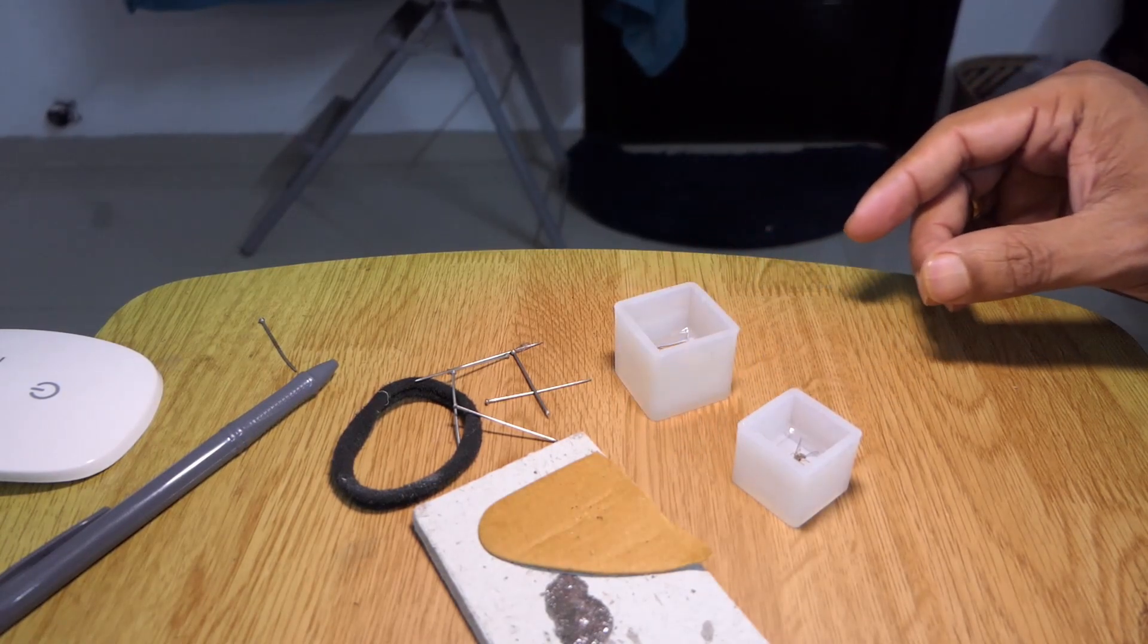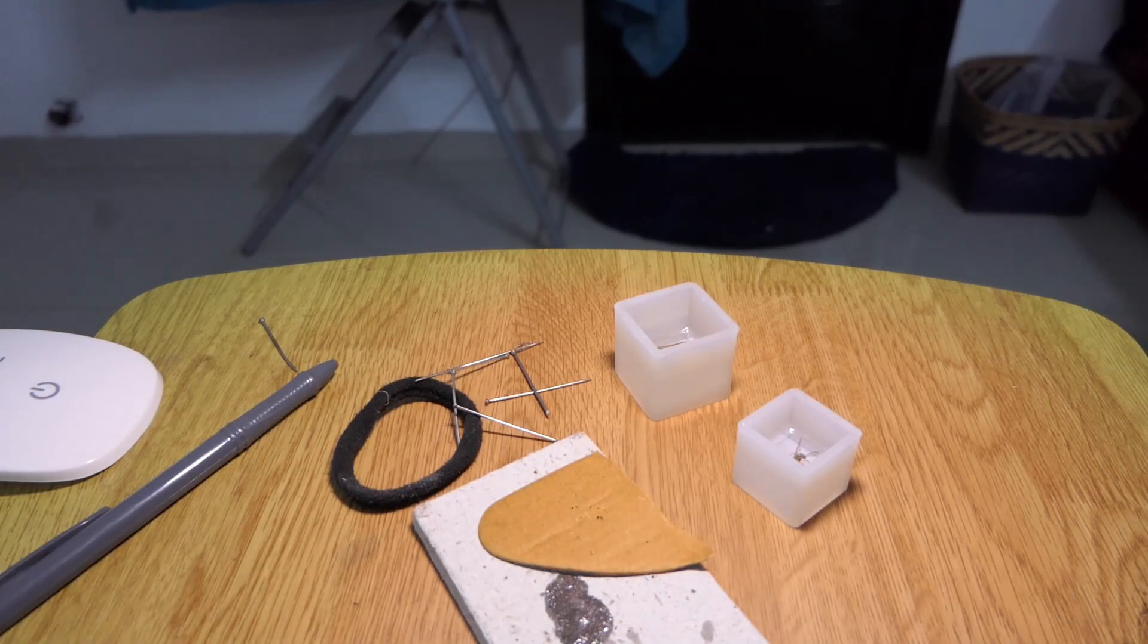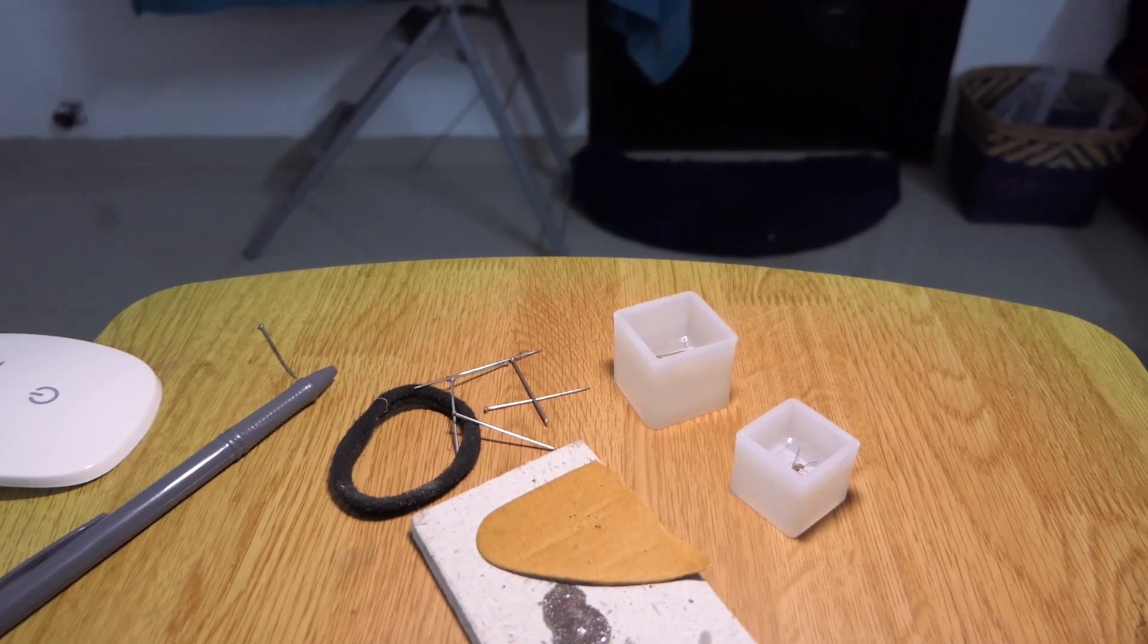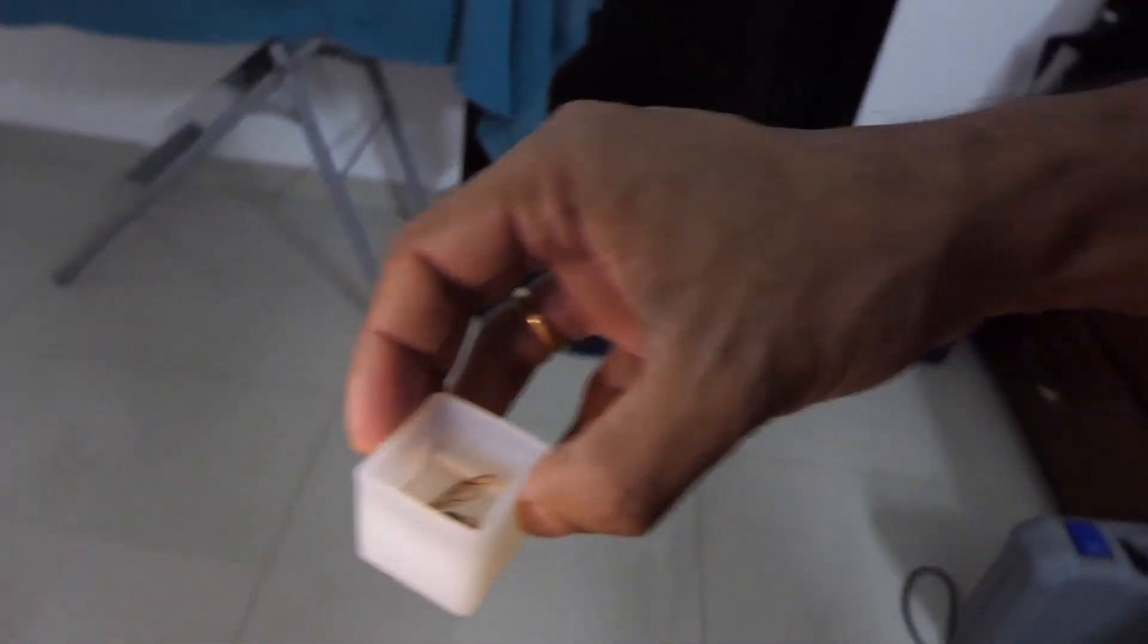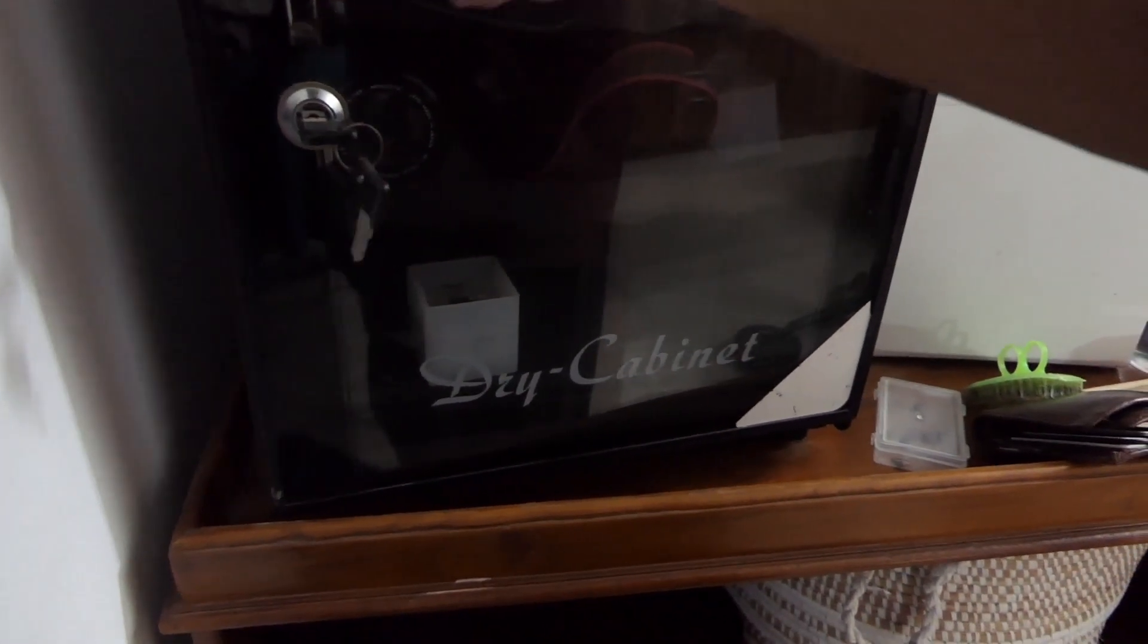So that's it, I have now stuck both the insects in place. What I need to do now is try and dry it out a little bit. For that, I usually keep these things in a place that's free of dust, and I use my camera dry cabinet because it has no moisture, it's free of dust, and it's a safe place where it will not get disturbed. I will keep it in here and come back after a few hours to check on it.